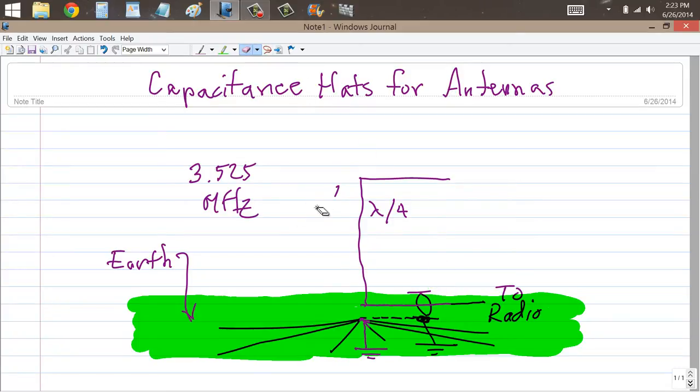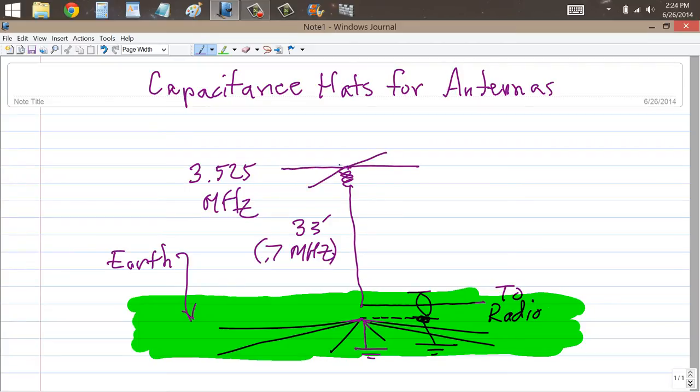You could run it up for 33 feet and then over for 33 feet and then have another 33 foot support over there. But there's another trick that you can use and it's very interesting. Suppose that you decided that in fact you did want to make that thing 33 feet tall. So you went ahead and did that. Now it's going to be resonant on 7 megahertz.